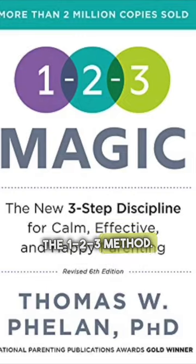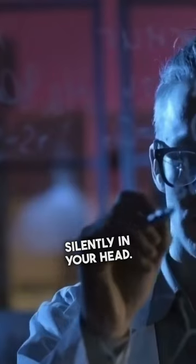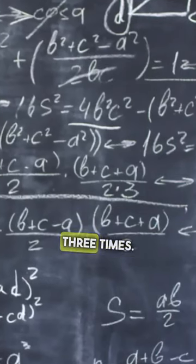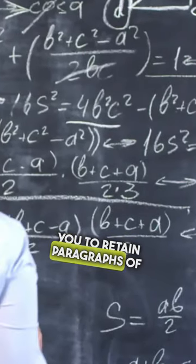Number two, the one-two-three method. First, you read silently in your head. Next, you write everything down that you can remember on a blank piece of paper. Repeat steps one and two three times. This will allow you to retain paragraphs of information at a time.